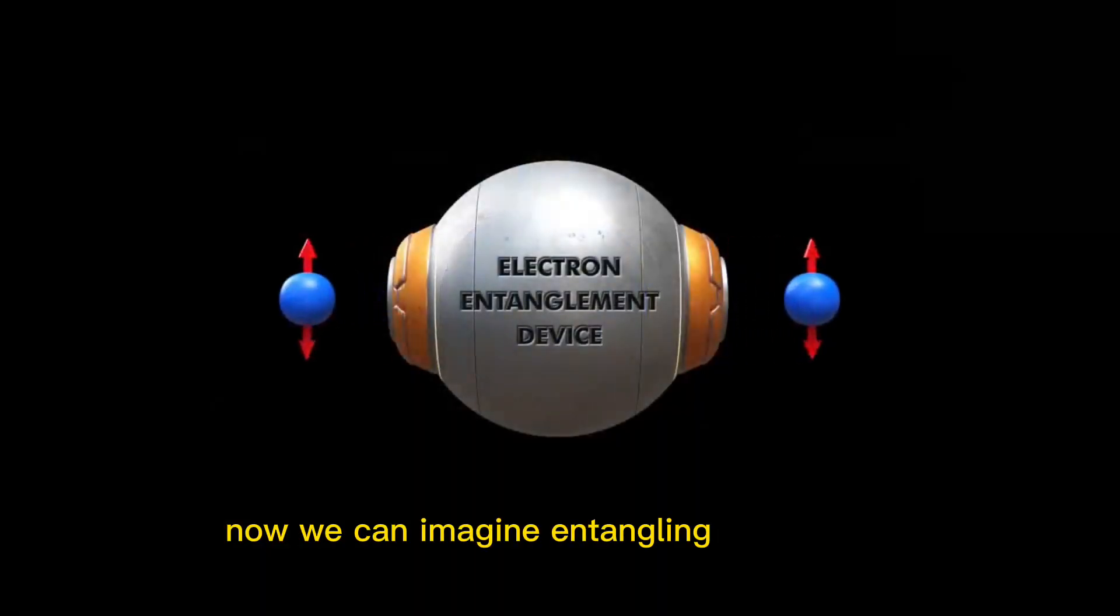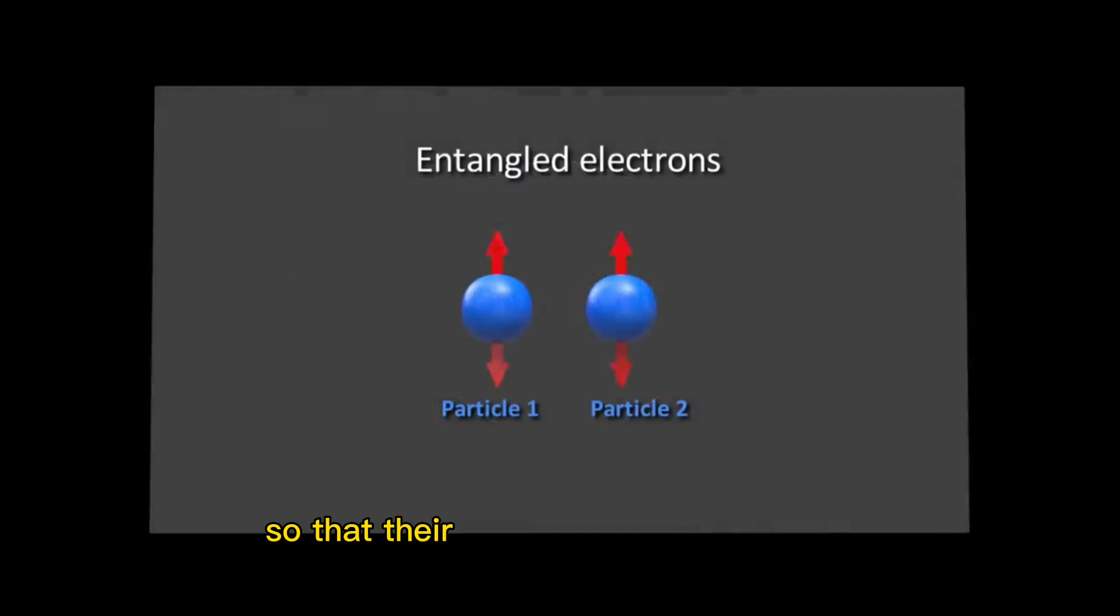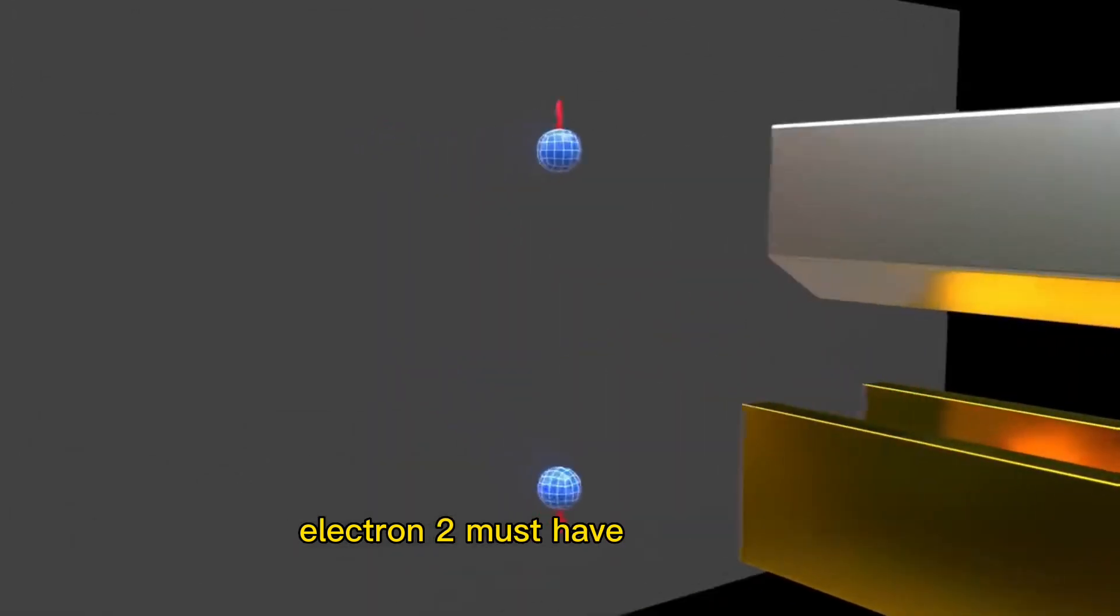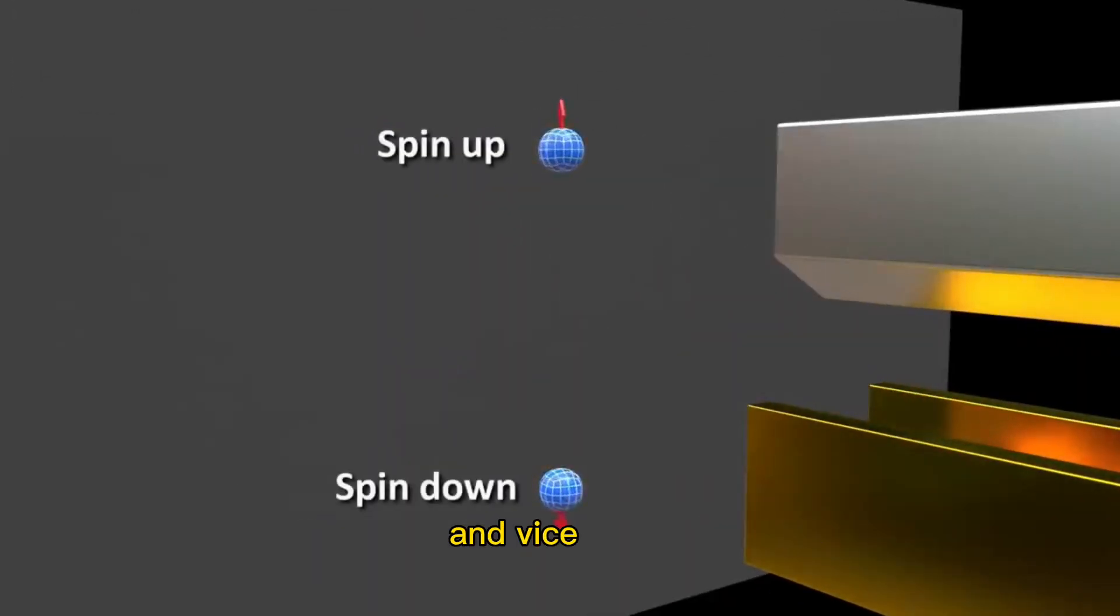Now we can imagine entangling two electrons, so that their spins are always pointing in opposite directions. If electron 1 has a spin up, electron 2 must have a spin down, and vice versa.